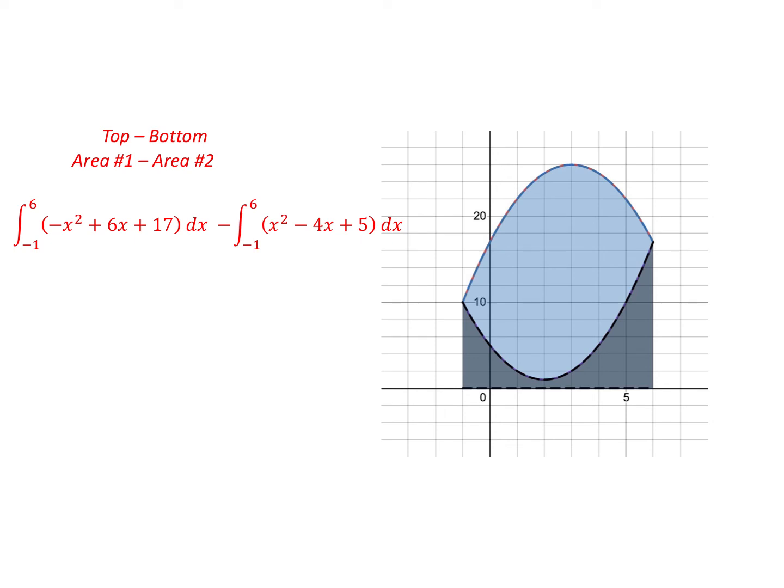Well, now we want to find the area between the two curves, and this is basically going to be the top area minus the bottom area, or area 1 minus area 2. And as you can see, I just simply substituted in the integrals for finding area 1 and area 2. So it's top area minus bottom area.